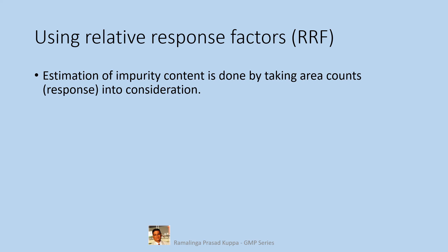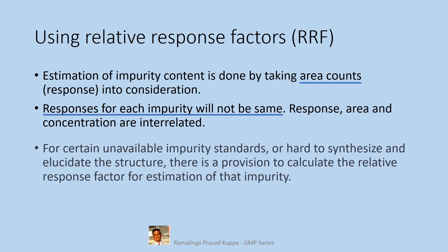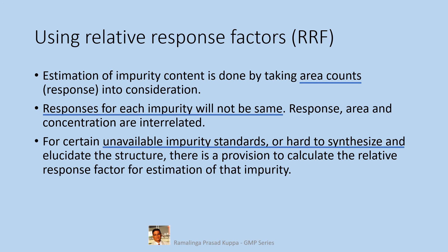Estimation of impurity content is done by taking area counts response into consideration. Responses for each impurity will not be the same. Area counts per unit concentration will not be the same in all cases, so it is compared with another standard compound's area counts per unit concentration, considering that standard compound as reference. For certain unavailable impurity standards that are hard to synthesize and elucidate the structure, there is a provision to calculate the relative response factor for estimation of that impurity.